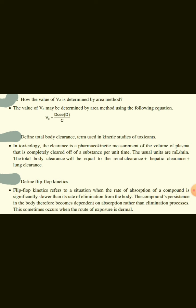Define total body clearance as a term used in kinetic studies of toxicants. In toxicology, clearance is a pharmacokinetic measurement of the volume of plasma that is completely cleared of a substance per unit time. The usual units are ml per minute. Total body clearance equals renal clearance plus hepatic clearance plus lung clearance.